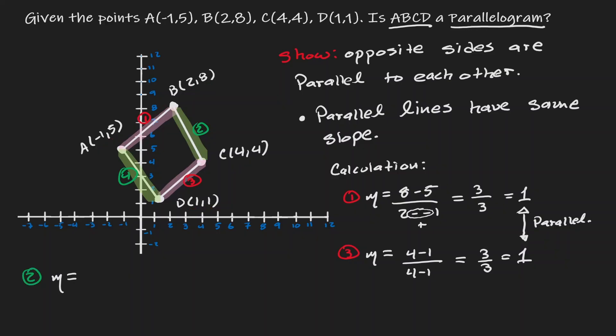Let's find the difference of y's, eight minus four, and divide it by the difference of x's, two minus four. That is four over negative two, which is just negative two.